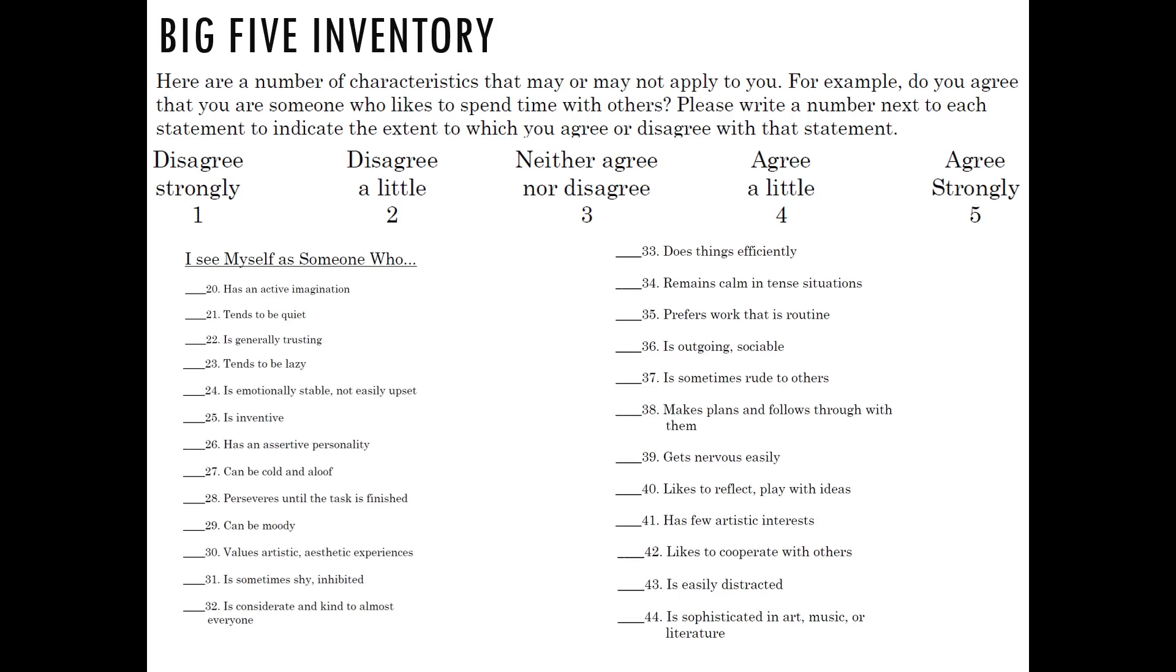That completes the scale. If you need to pause or go back and reread any items, please feel free to do that. Now you're going to reverse your ratings for the items listed on screen. If you originally gave a one, change it to a five. If you gave a two, change it to a four. Three stays the same. Four changes to two, and five changes to one. Go through and do that for each of those items listed in the box. Pause me, reverse your ratings, and I'll meet you back here.